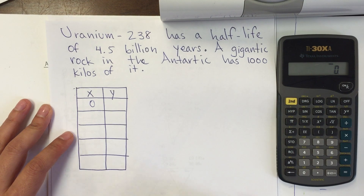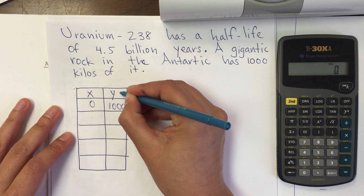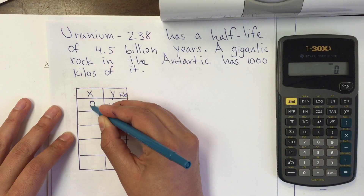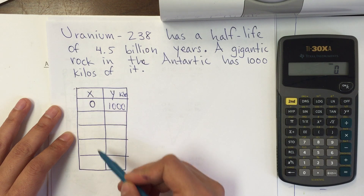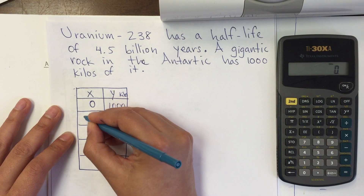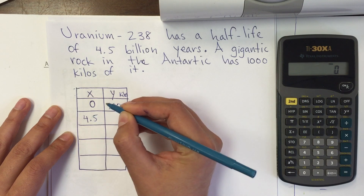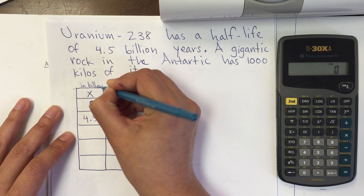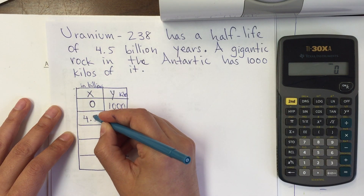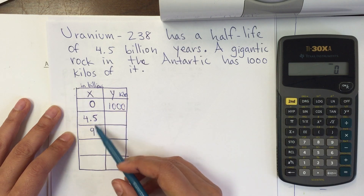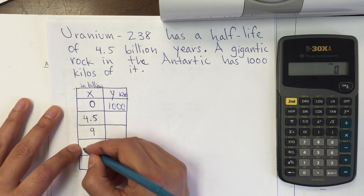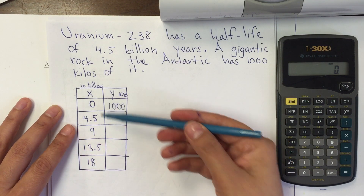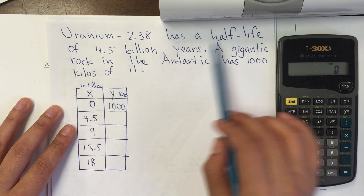How can you create a table with this information? We'll use zero for the initial point and it has 1,000 kilos. The cycle — how often does the half-life occur — is every 4.5 billion years. So this is in billions of years: 0, 4.5, then 9, then 13.5, then 18.